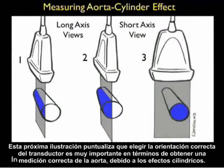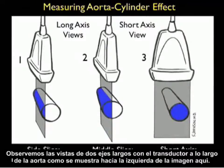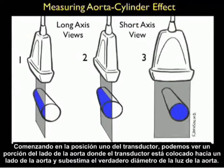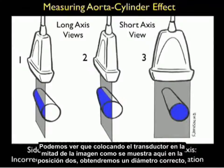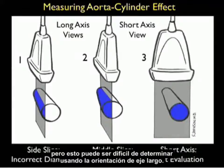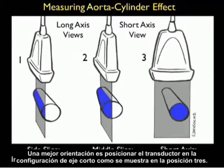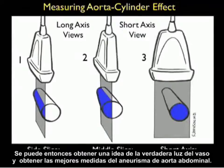Choosing the correct probe orientation is very important for getting a correct measurement of the aorta due to the cylinder effect. In probe position 1, a side slice underestimates the true diameter of the aortic lumen. Probe position 2, positioned towards the middle, gets a correct diameter but can be difficult to ascertain using the long axis orientation. A better orientation is probe position 3, the short axis configuration, which gives the best measurements of the abdominal aortic aneurysm.